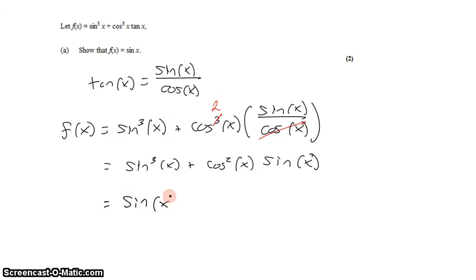If I pull a sine out, that leaves me with, well, if I have three sines, sine of x times sine of x times sine of x and pull one out, it leaves me with just two sine squared of x. And if I pull this sine x out on the other side, it will leave me with cosine squared of x.